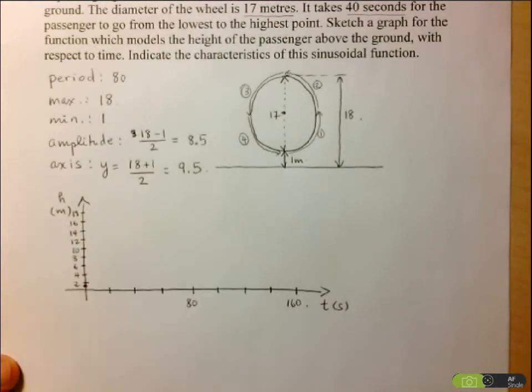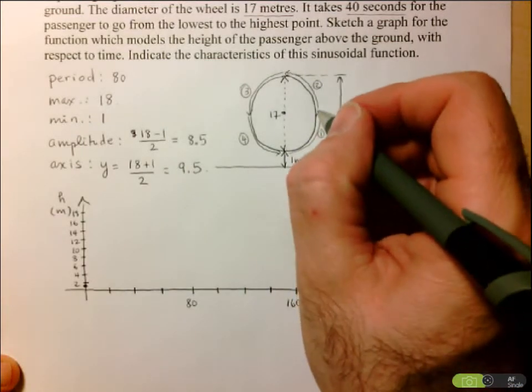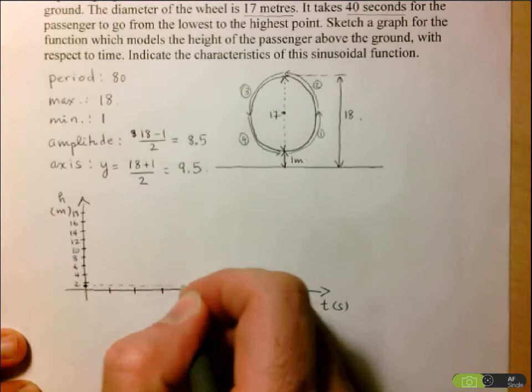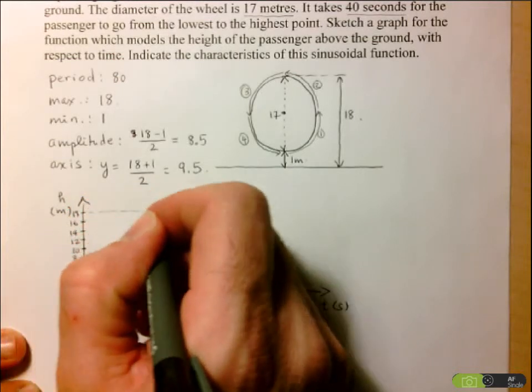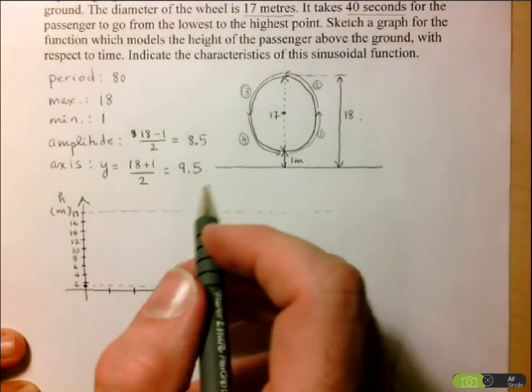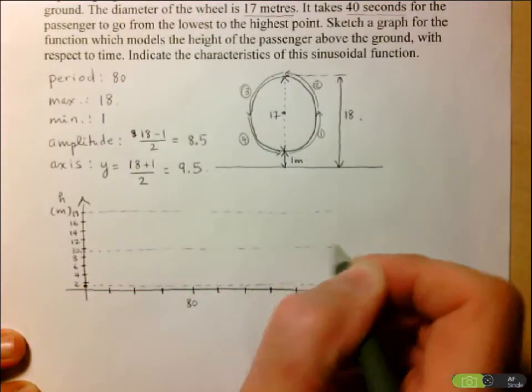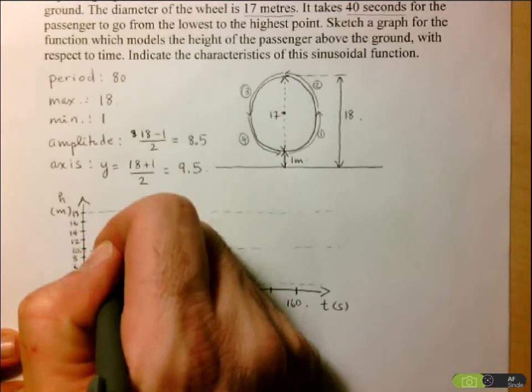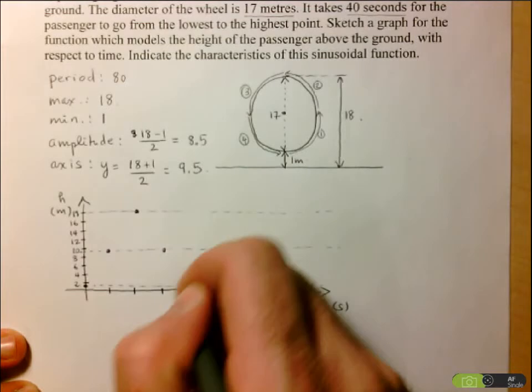About a quarter of the way through the period, I'm going to be at my axis. So in fact, it would be a good idea to draw a line at my minimum points. I'm going to draw a line at my maximum to help me draw it nicely. And I'm also going to draw a line at the axis, so at 9.5. Because this represents the midpoint between the minimum and the maximum. So a quarter of the way through, I'm at my axis. At the midway through, I get to my maximum. Then back to the axis, back to my minimum. So this completes one cycle.